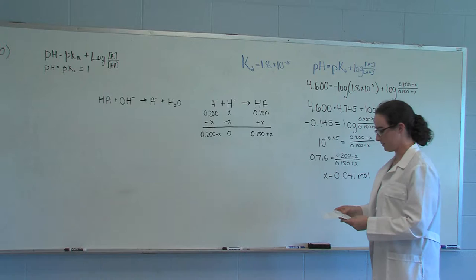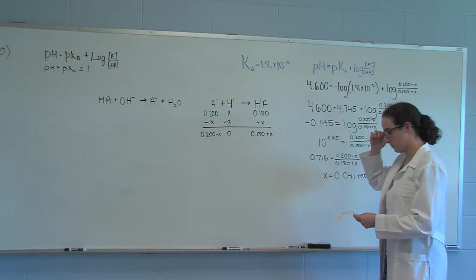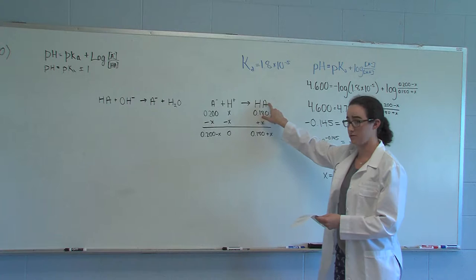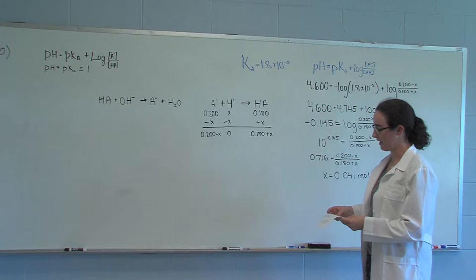When using the ratio of A minus to HA, use X to represent the number of moles of H plus. For A minus, you'll subtract X because A minus and H plus will form HA, as you see in this equation. For HA, you'll add X because the added H plus will react with A minus to create the HA.